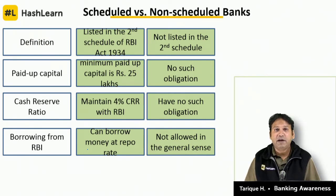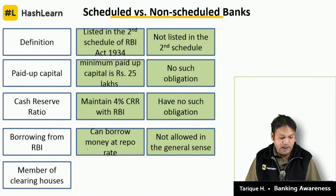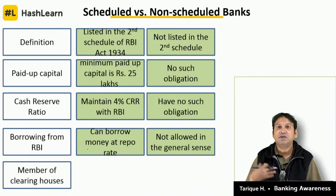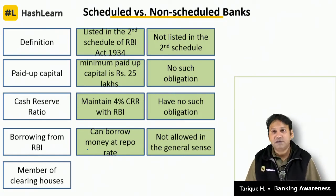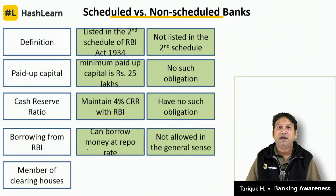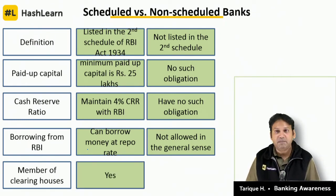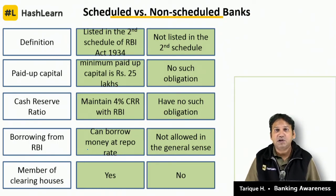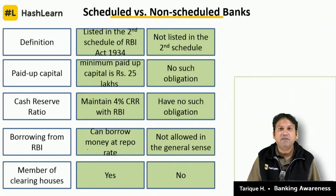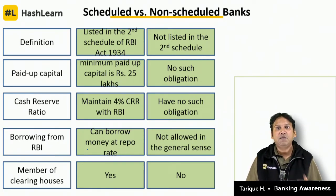Banks can borrow money from RBI at repo rate. Regarding clearing houses — when you send a check, it goes to the clearing house from which the amount gets transferred to the payee's account. The one issuing the check is the payer and the one getting paid is the payee. Scheduled banks are members of clearing houses, whereas non-scheduled banks are not members of clearing houses.